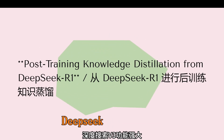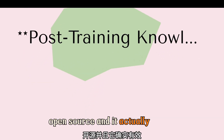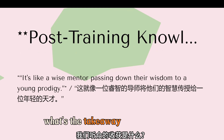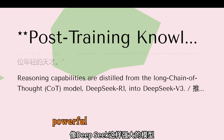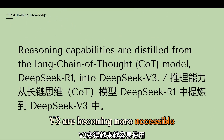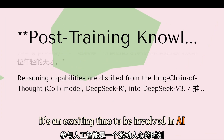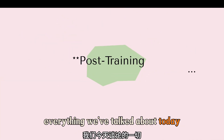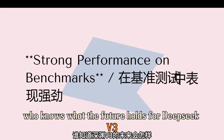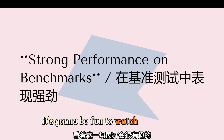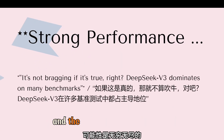DeepSeek V3 is powerful, efficient, open source, and it actually works. The landscape of AI is changing — powerful models like DeepSeek V3 are becoming more accessible and are pushing the boundaries of what's possible. It's an exciting time to be involved in AI. And who knows what the future holds for DeepSeek V3 and open source AI in general — it's going to be fun to watch it all unfold. It's like having a powerful new tool, and the possibilities are endless.